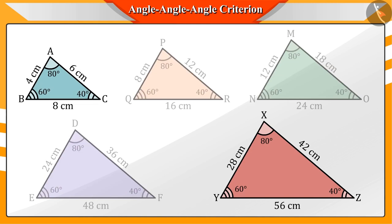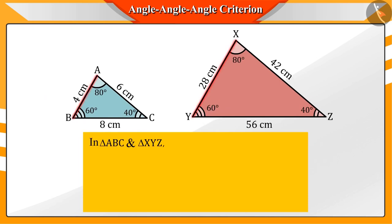Now, if we observe the triangle ABC and XYZ, then we see that their corresponding sides are proportional.